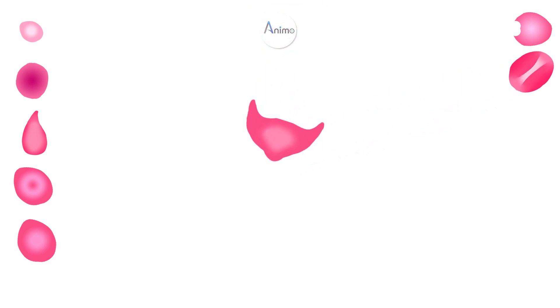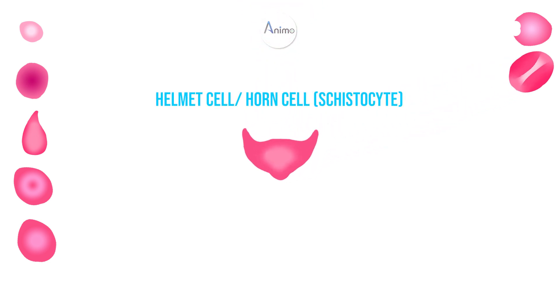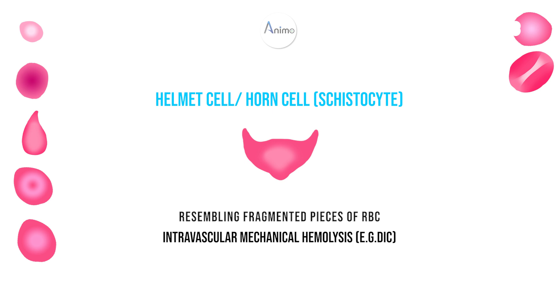The next one is helmet cell, also called schistocyte. It looks like fragmented pieces of RBC, so it is also called horn cell or helmet cell. It is found in intravascular mechanical hemolysis of RBC, such as disseminated intravascular coagulation.